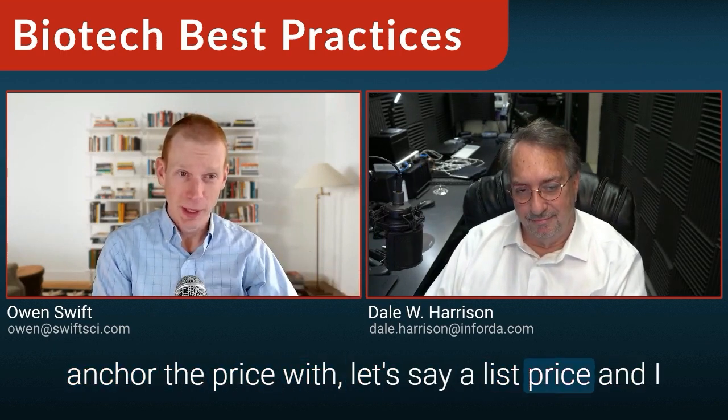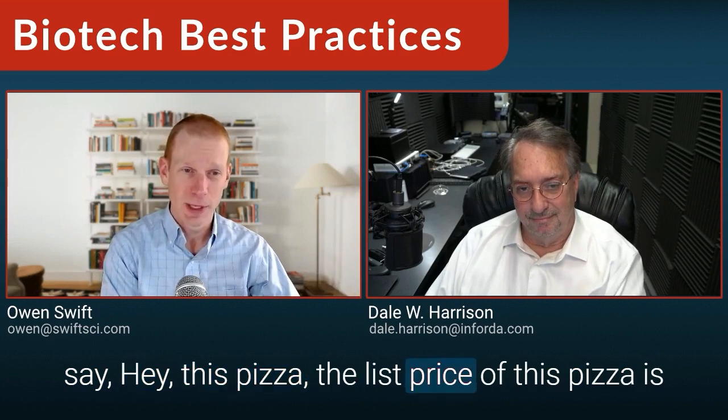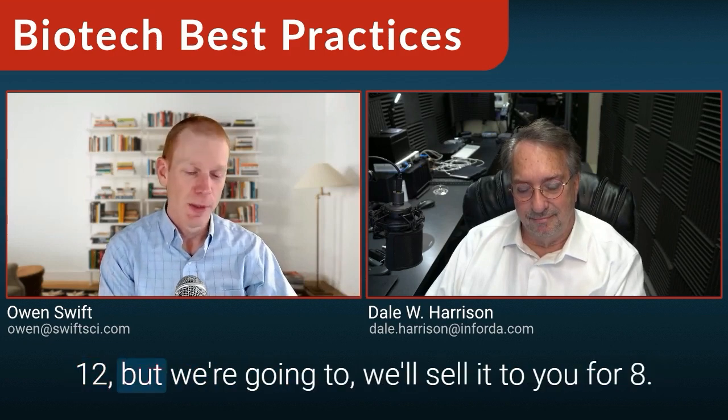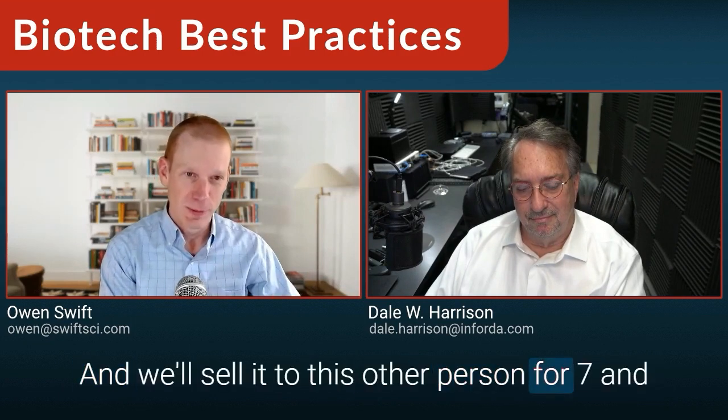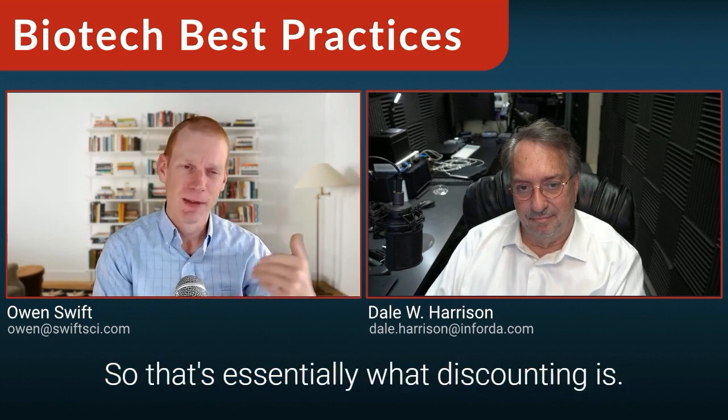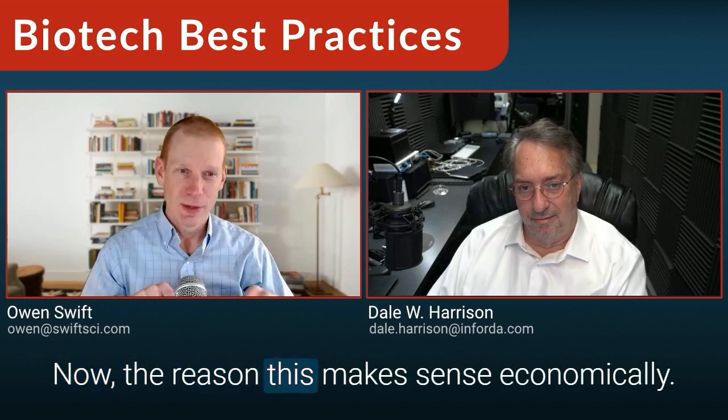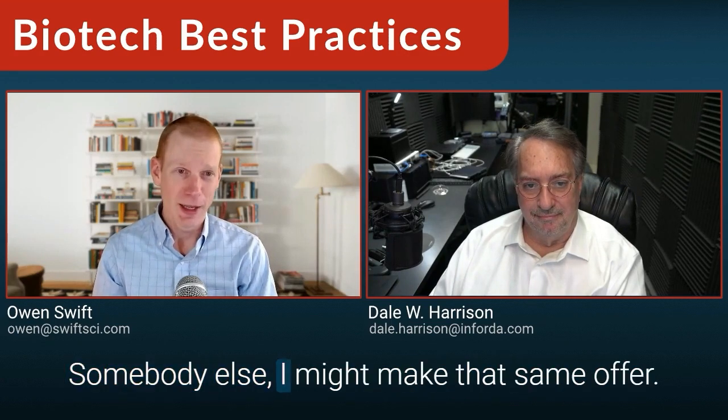Discounting would be if we anchor the price with a list price — say this pizza's list price is $12, but we'll sell it to you for $8 and to this other person for $7, using coupons or something like that. The reason this makes sense economically is because people have different willingness to pay. If I'm selling pizzas and Dale likes pizza, Dale is going to pay $12 because it's lunchtime, he's hungry, and he likes pizza.